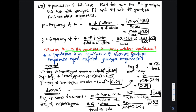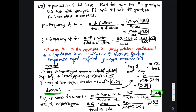We said a population is in equilibrium if the observed genotype frequencies equal the expected genotype frequencies. Expected: P² = 0.64, 2PQ = 0.32, Q² = 0.04. Observed: the same values. So yes, this population is in Hardy-Weinberg equilibrium. I hope this video helped.